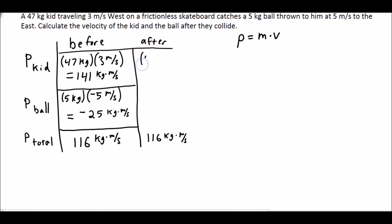So the kid will still be 47 kilograms times whatever velocity they're going. The ball will still be 5 kilograms times whatever velocity they're going.